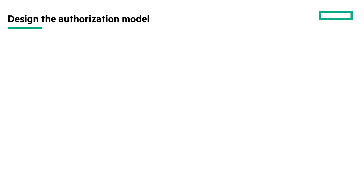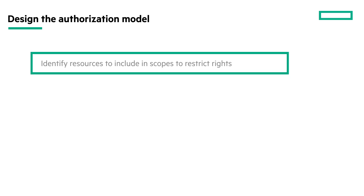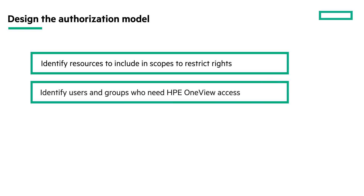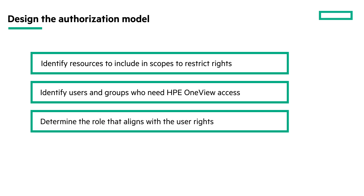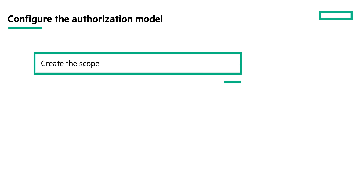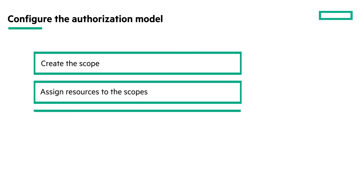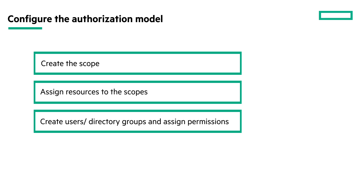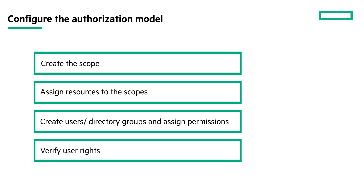To configure SPAC, first let us design the authorization model. Identify the resources that you want to include in the scope. Then make a list of local users and groups who need HPE OneView access. Identify the role that you want to assign to the groups and local users based on the required privileges. For example, the network administrator role can be assigned to a user to manage all the network resources. Let us configure the authorization model: create the scope, assign resources to the scope, add the local users or directory groups and assign permissions, and verify the rights assigned to the users.